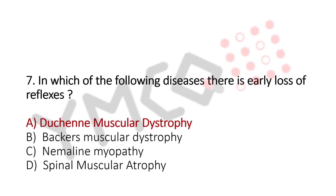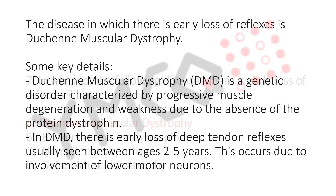A. Duchenne muscular dystrophy. The explanation for this question is: the disease in which there is early loss of reflexes is Duchenne muscular dystrophy. DMD is a genetic disorder characterized by progressive muscle degeneration and weakness due to the absence of the protein dystrophin.